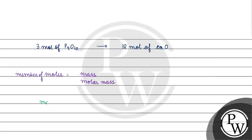Mass of calcium oxide is basically equal to number of moles, which is 18 moles, times molar mass. The molar mass for calcium is 40 plus 16 equals 56 grams per mole. We have 1008 grams.